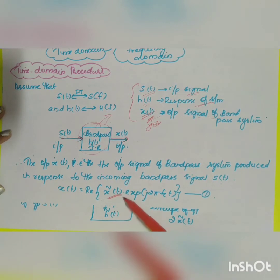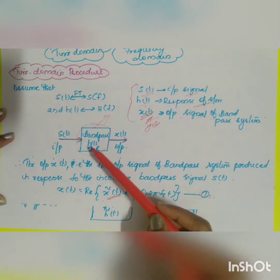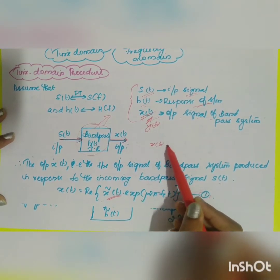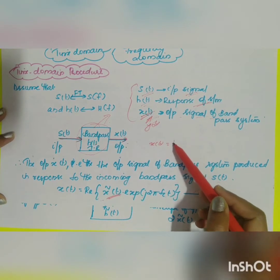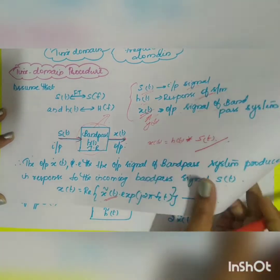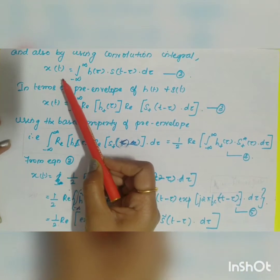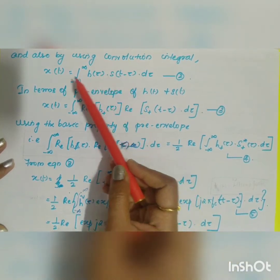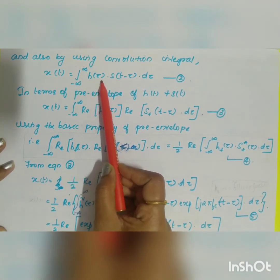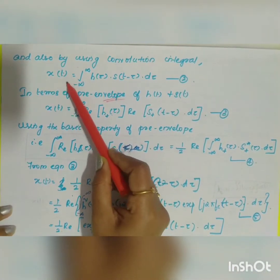So x(t) = Re[x̃(t) · e^(j2πfct)] — let us call this Equation 1. The output x(t) also equals the convolution of h(t) and the input signal s(t). Using the convolution integral: x(t) = ∫ from −∞ to ∞ of h(τ) · s(t − τ) dτ — let us call this Equation 2.